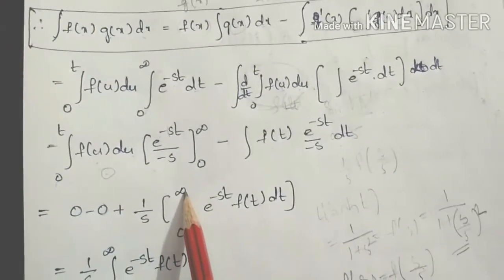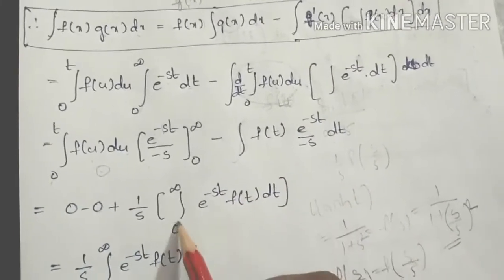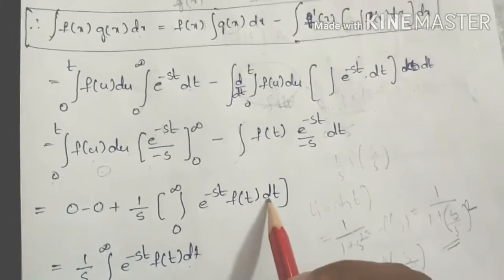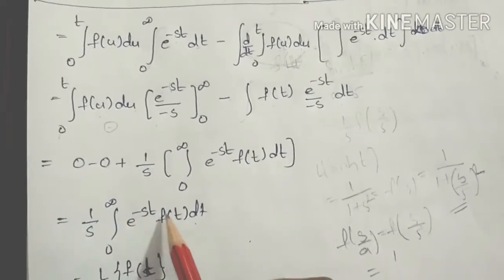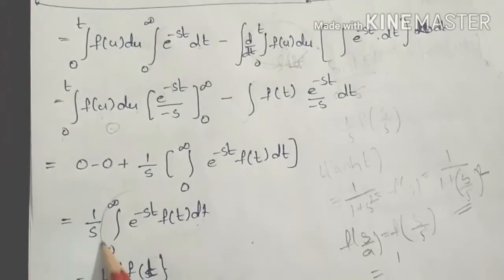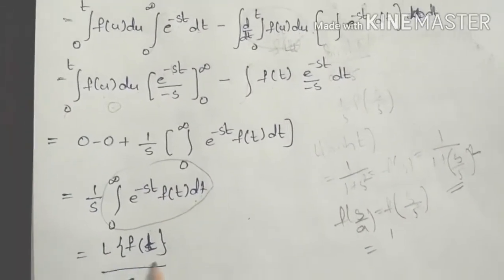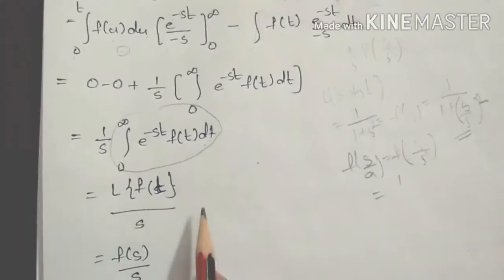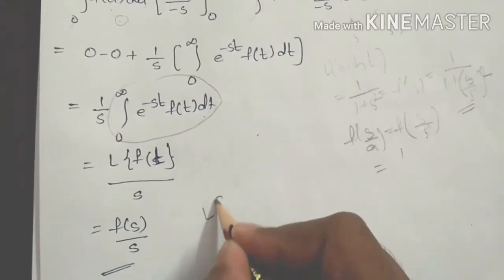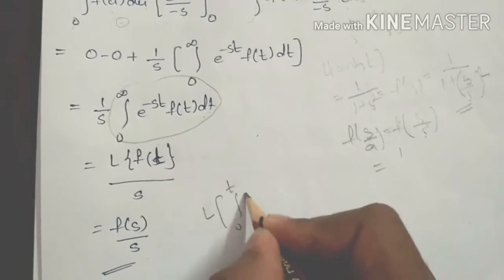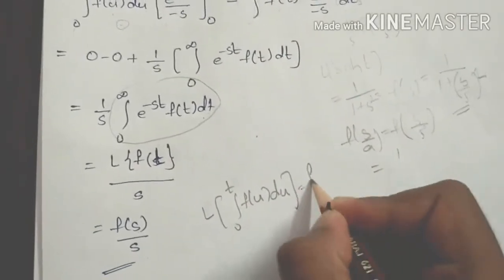The remaining term is (1/s) times the integral from 0 to infinity of e^(-st) f(t) dt, which equals (1/s) times the Laplace transform of f(t), which is F(s)/s. Therefore, the Laplace transform of the integral from 0 to t of f(u) du equals F(s)/s. Proof complete.